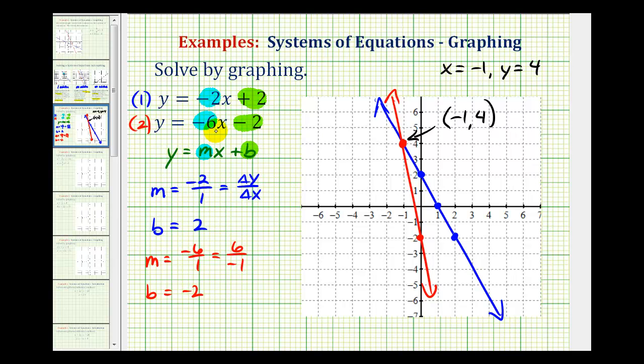And because this system has a solution, we call it a consistent system. And because the equations are different, we say the equations are independent.